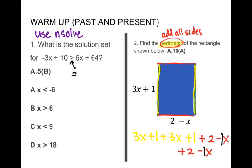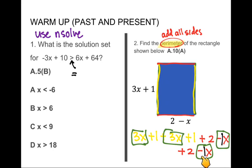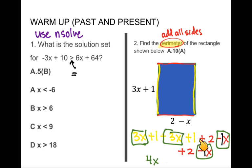The x-terms are like terms: 3x, 3x, −x, and −x. So 3 + 3 − 1 − 1 = 4, giving us 4x. For the constant terms: 1 + 1 + 2 + 2 = 6. So the perimeter is 4x + 6.